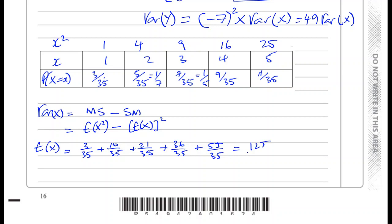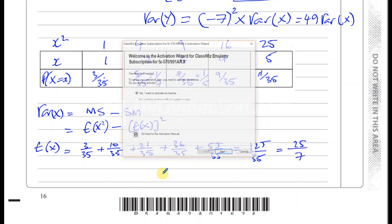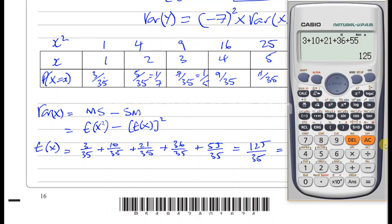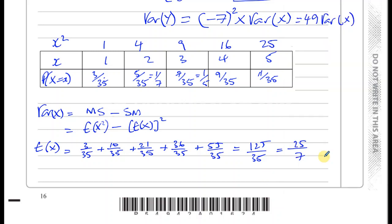Let's just add those together. We're going to get 3 over 35, we'll just do 3 plus 10 plus 21 plus 36 plus 55. That gives us 125 over 35. 5 goes into both of those, I think that's 25 over 7. 25 times 5 is 125, 7 times 5 is 35. Let's just make sure. Then we've got 125 divided by 35, which gives us 25 over 7.